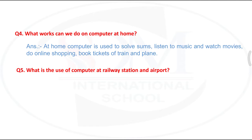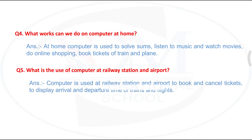Next question: what is the use of computer at railway station and airport? Railway station और airport पर computer का क्या use है? Computer is used at railway station and airport to book and cancel tickets. यानि tickets को book करने के लिए और cancel करने के लिए भी use होता है। It is also used to display the arrival and departure time of trains and flights on large displays.